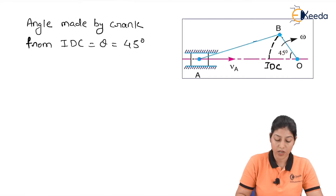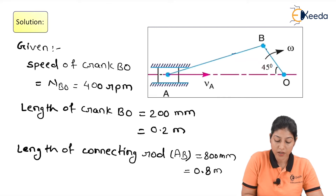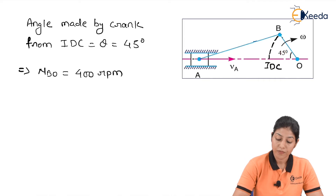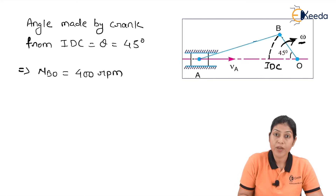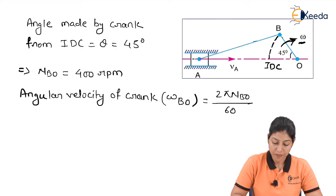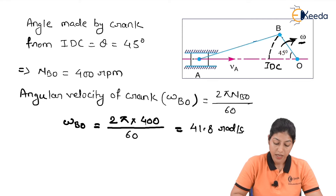First, calculation will be done on the basis of the speed of crank BO. N_BO is 400 rpm. On that basis we can define the angular velocity of crank omega. This crank is rotating in the clockwise direction with angular velocity omega. The formula is omega_BO = 2π × N_BO / 60 = 2π × 400 / 60, which gives 41.8 radians per second. This is the angular velocity of crank BO.